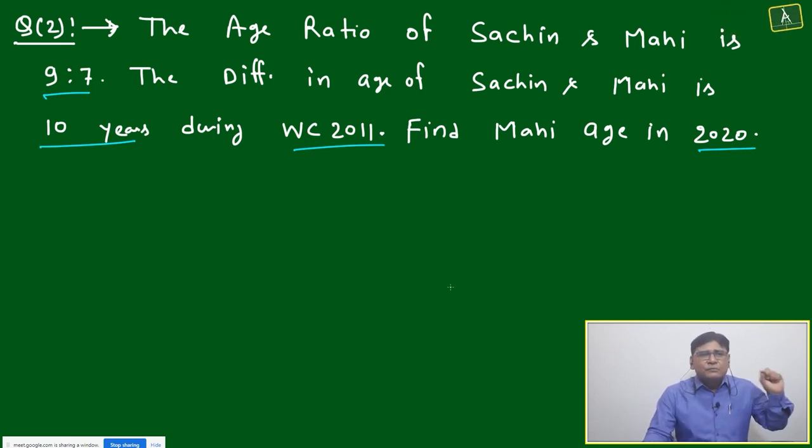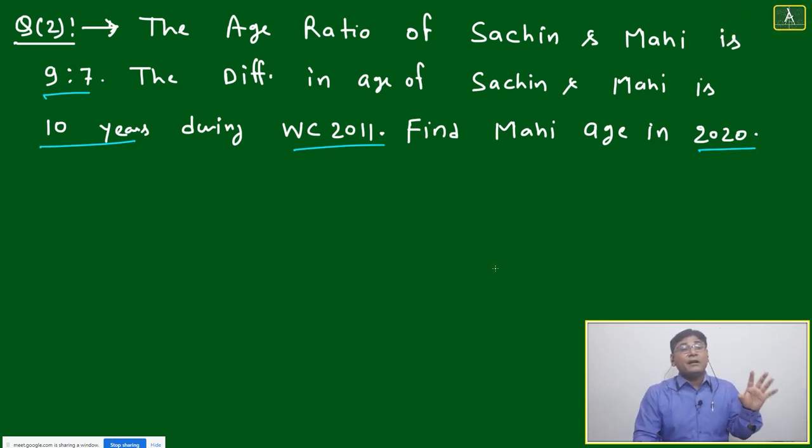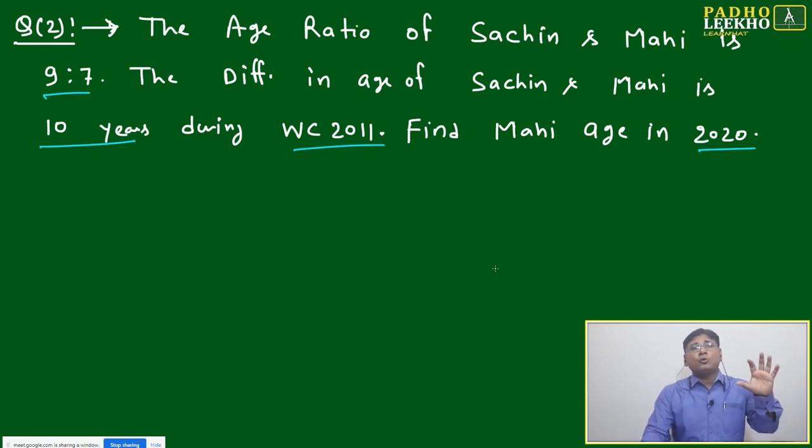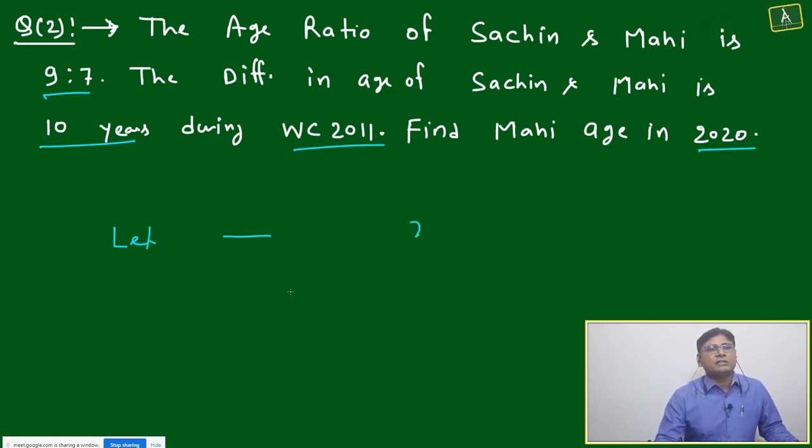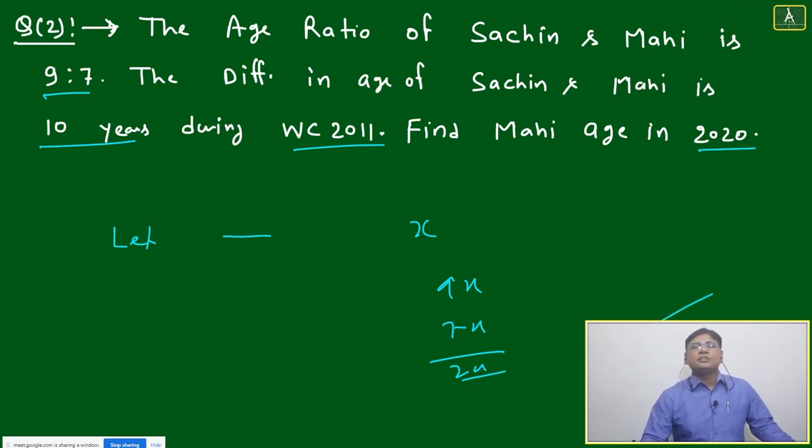This is not a tough question. Today's questions are average or moderate level. I want to expose you to thinking differently. Let the common factor of the ratio equal x. Then Sachin will be 9x, Mahi will be 7x, the difference will be 2x. 2x must equal 10, so x will come out. You will be able to solve this.